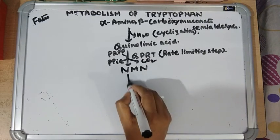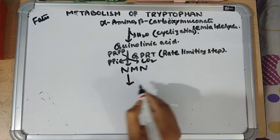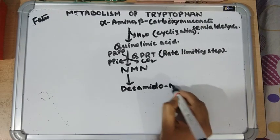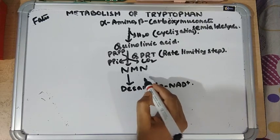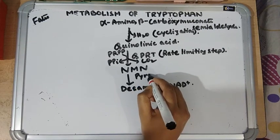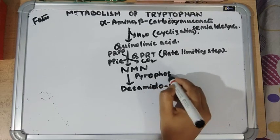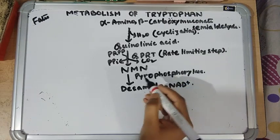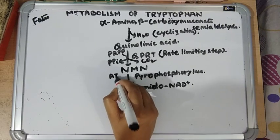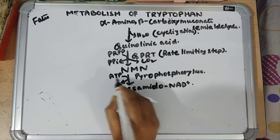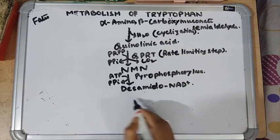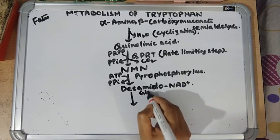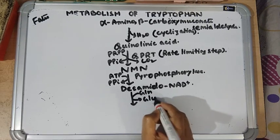Nicotinate mononucleotide (NMN) is converted into desamido-NAD by the enzyme pyrophosphorylase or NMN adenyl transferase, where the adenosine moiety is transferred from ATP to NMN to form desamido-NAD.